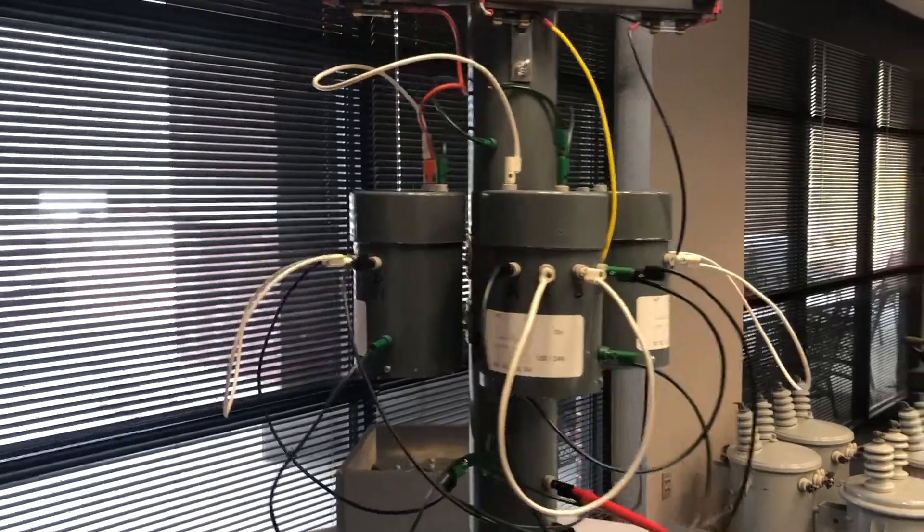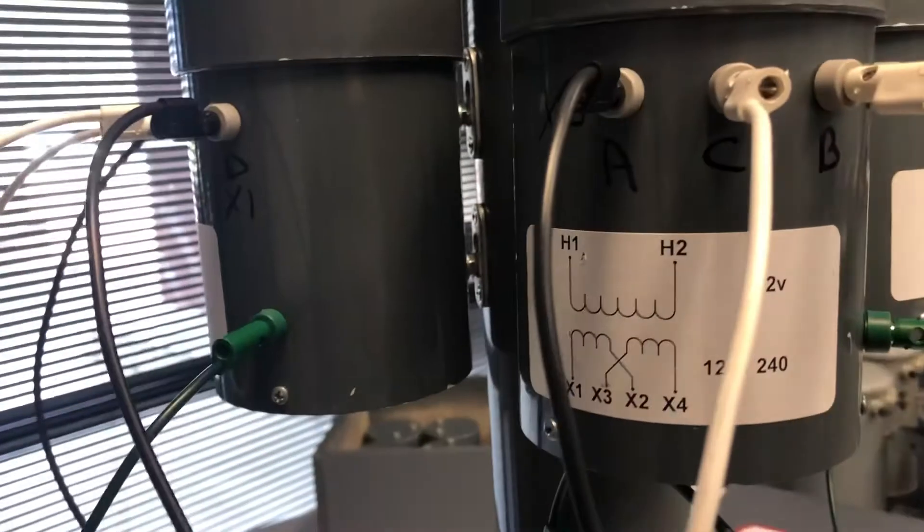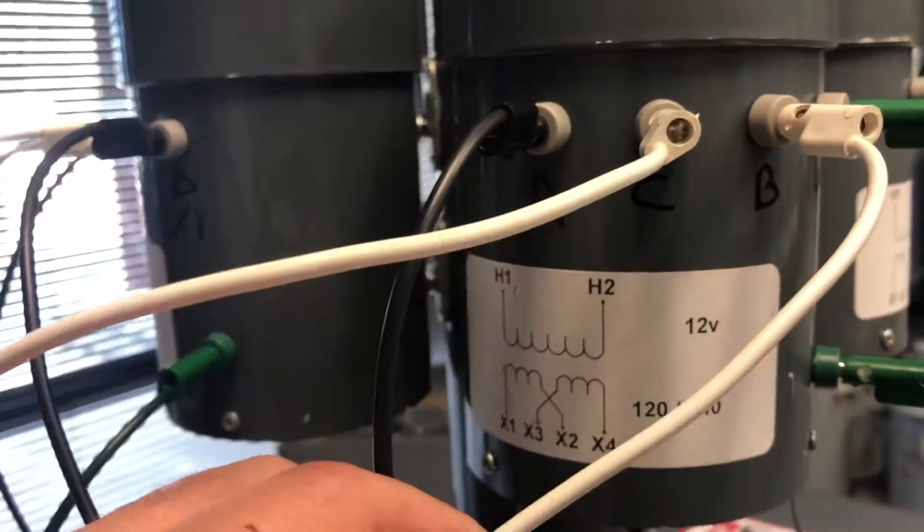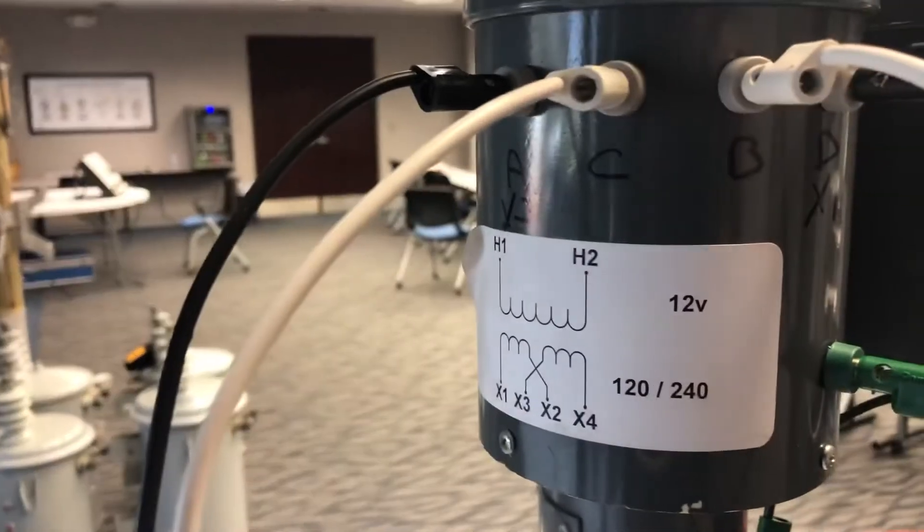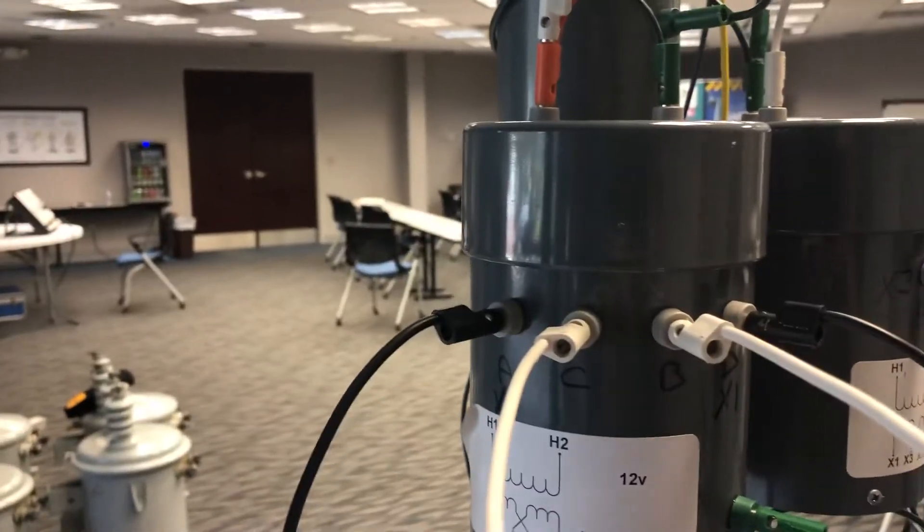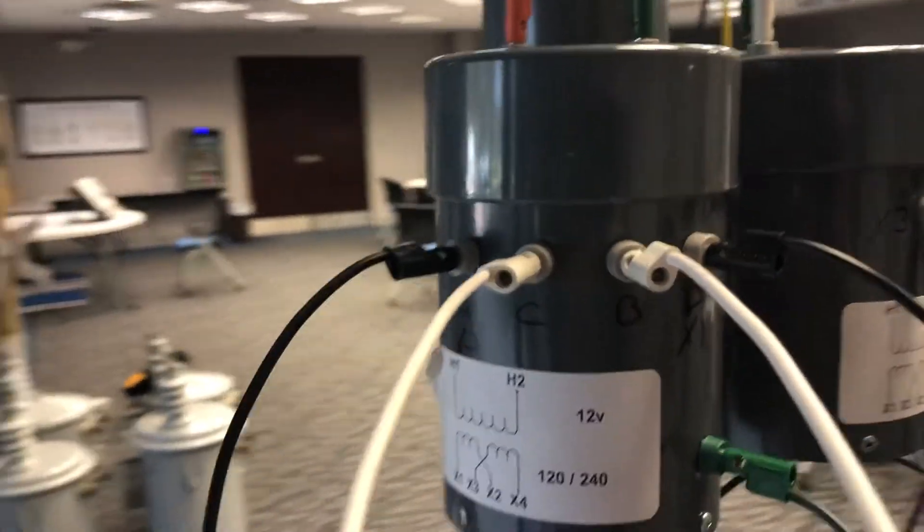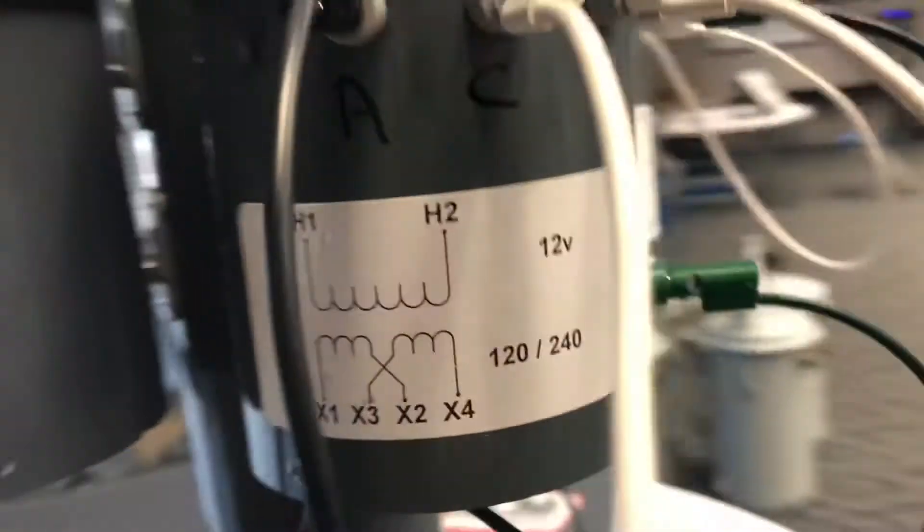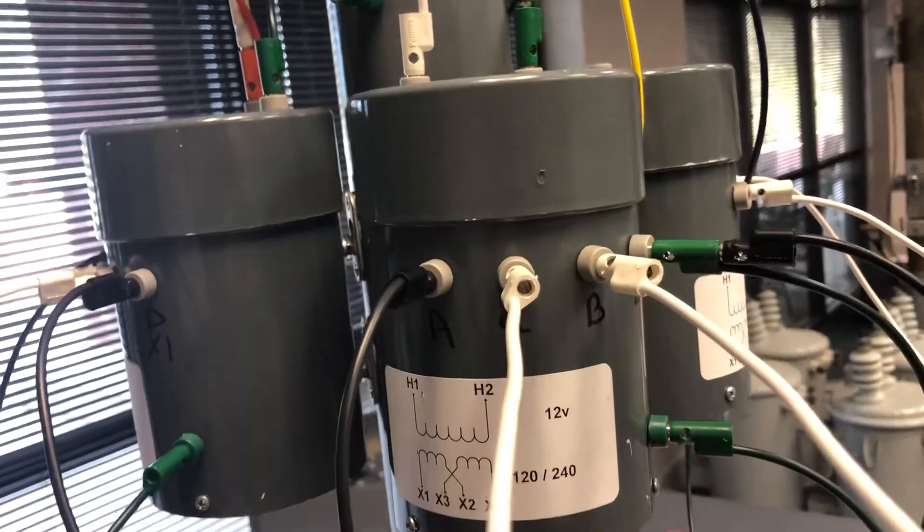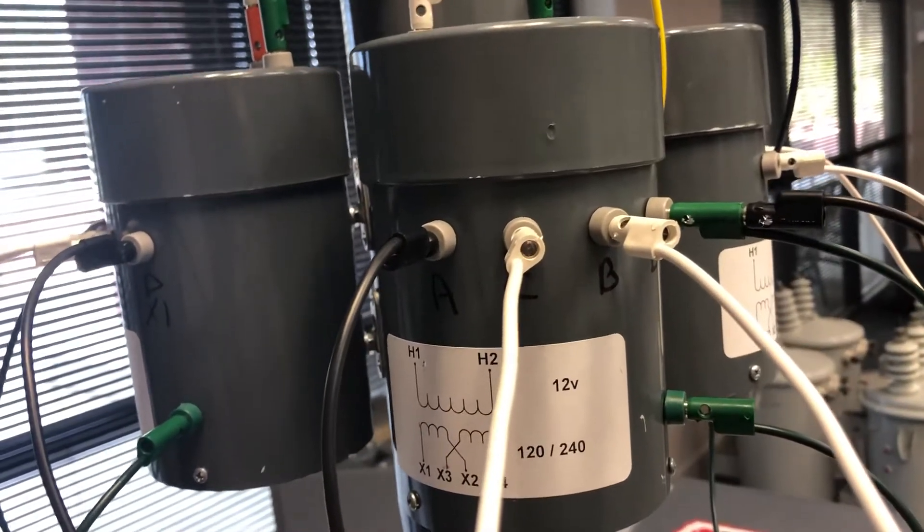So what we have here is one 120-240 pot, and we have one 120-240 pot. We have our secondary coils wired in series, got C and B together, and on this transformer we have our coils wired in series, that being C and B together.